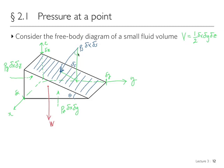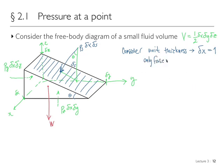This inclined surface has angle theta as drawn. The weight is the volume times the density times gravity. We simplify by considering unit thickness in the X direction, so Delta X equals one. Remember, the only forces are weight and pressure since this fluid volume is at rest. We perform a force balance in the Y direction.